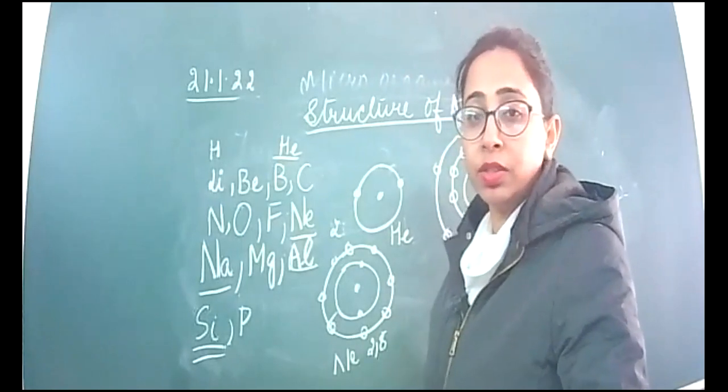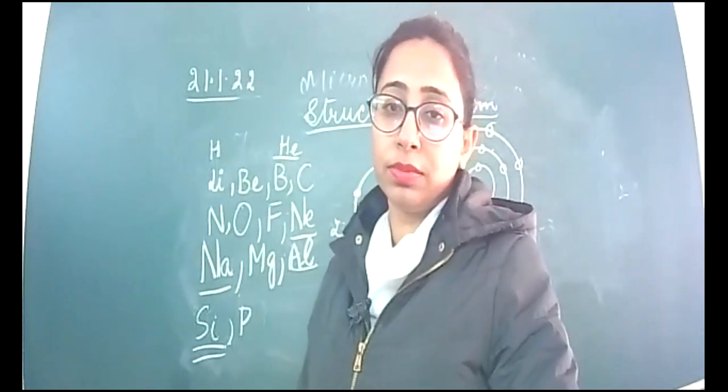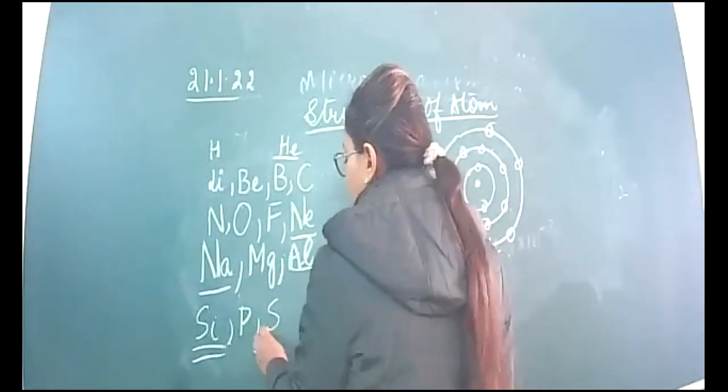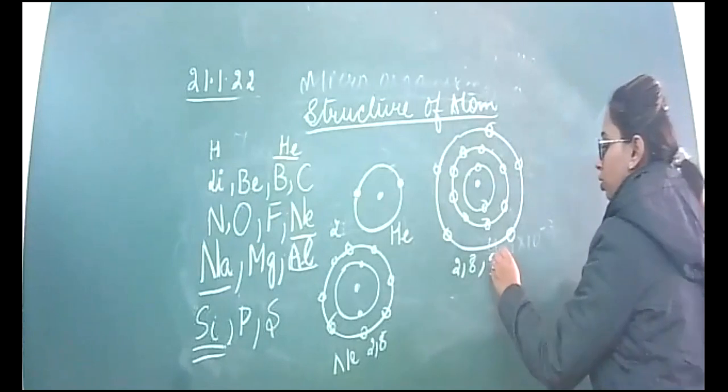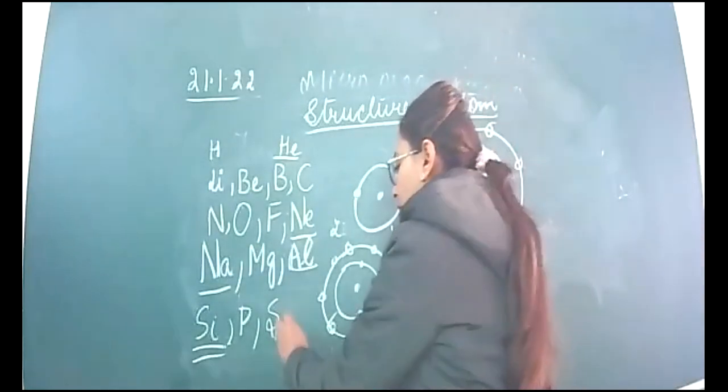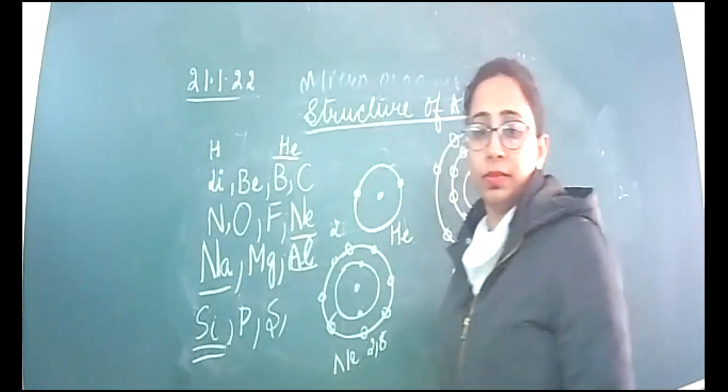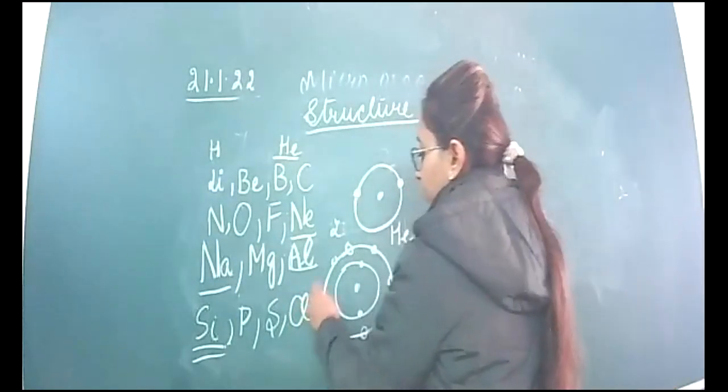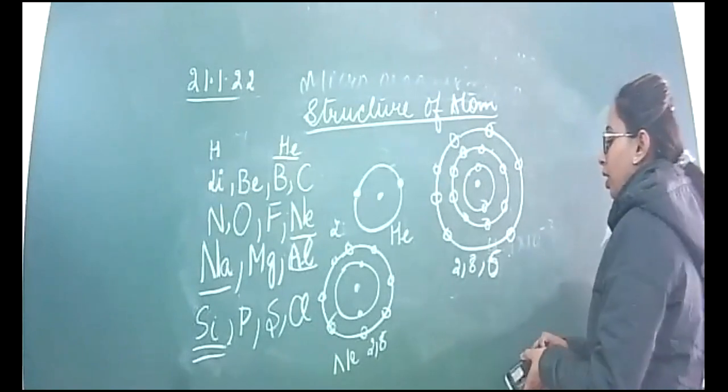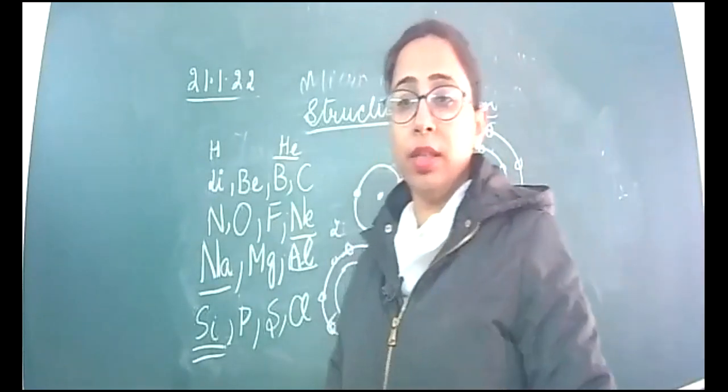After phosphorus, the next element is sulfur with atomic number 16, so one more electron will be added. After sulfur, the next element is chlorine, atomic number 17. Chlorine has seven electrons now in the valence shell, and here you will draw the seven electrons.